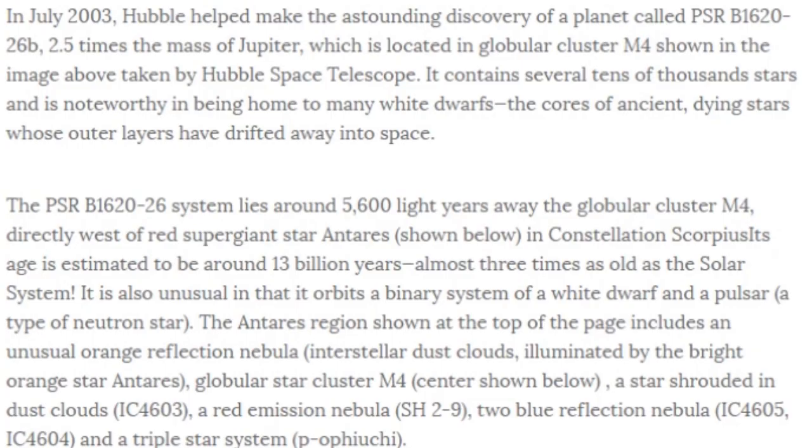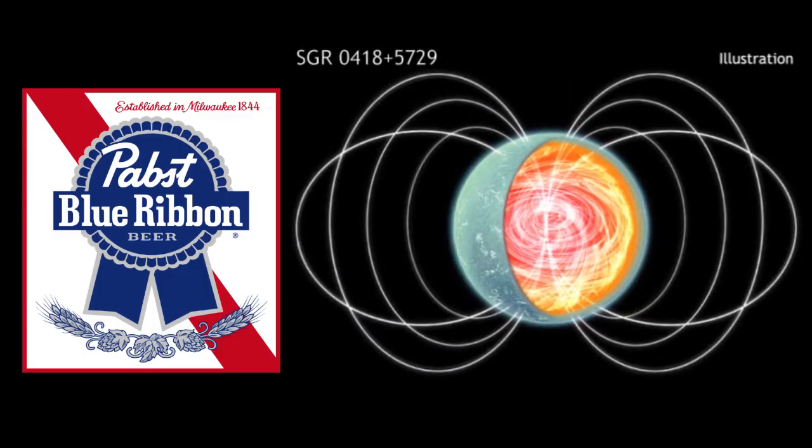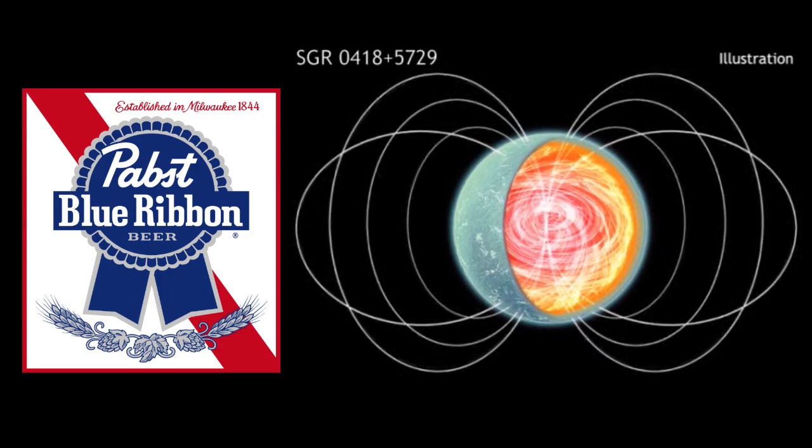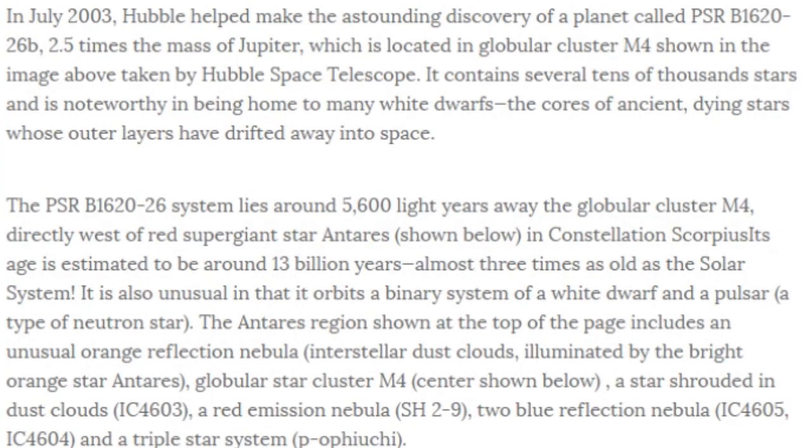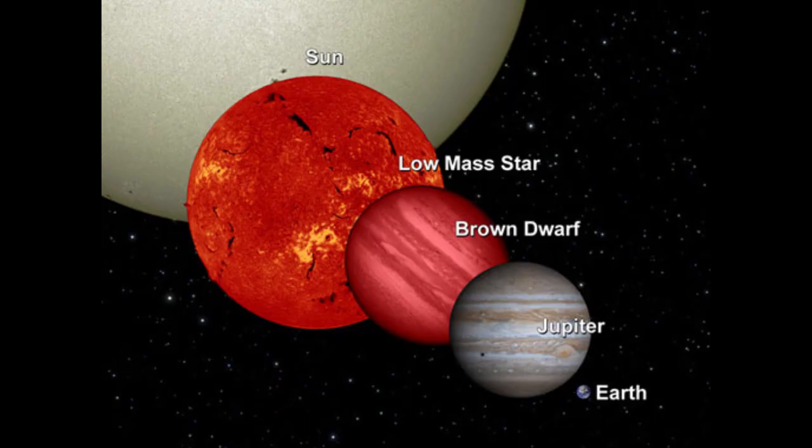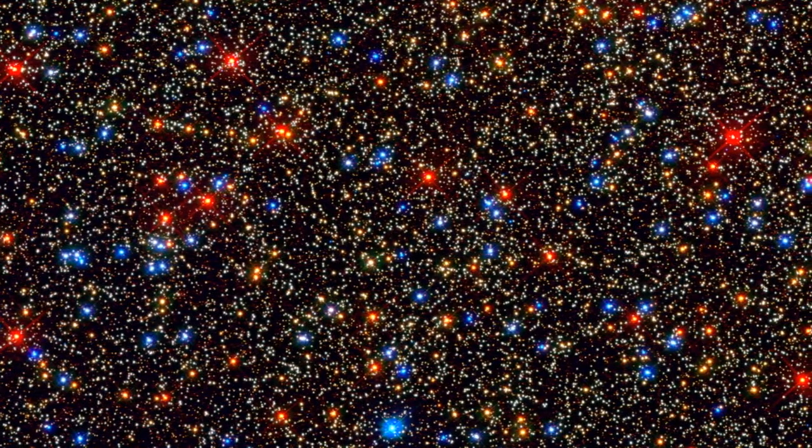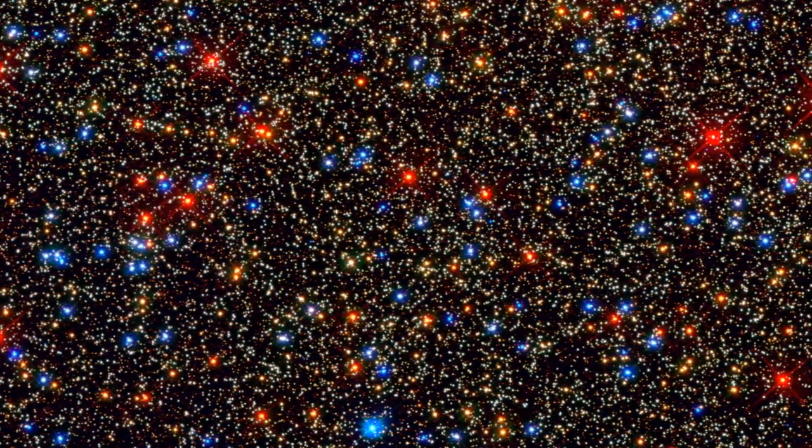You see, in July 2003, the Hubble helped make the astounding discovery of a planet called PSR B1620-26b. Yeah, I know the title says something else. I'm naming it Paps Blue Ribbon, whatever all those numbers are, because it's way cooler. This planet is 2.5 times the mass of Jupiter, which means it's gigantic, and it's located in globular cluster M4.